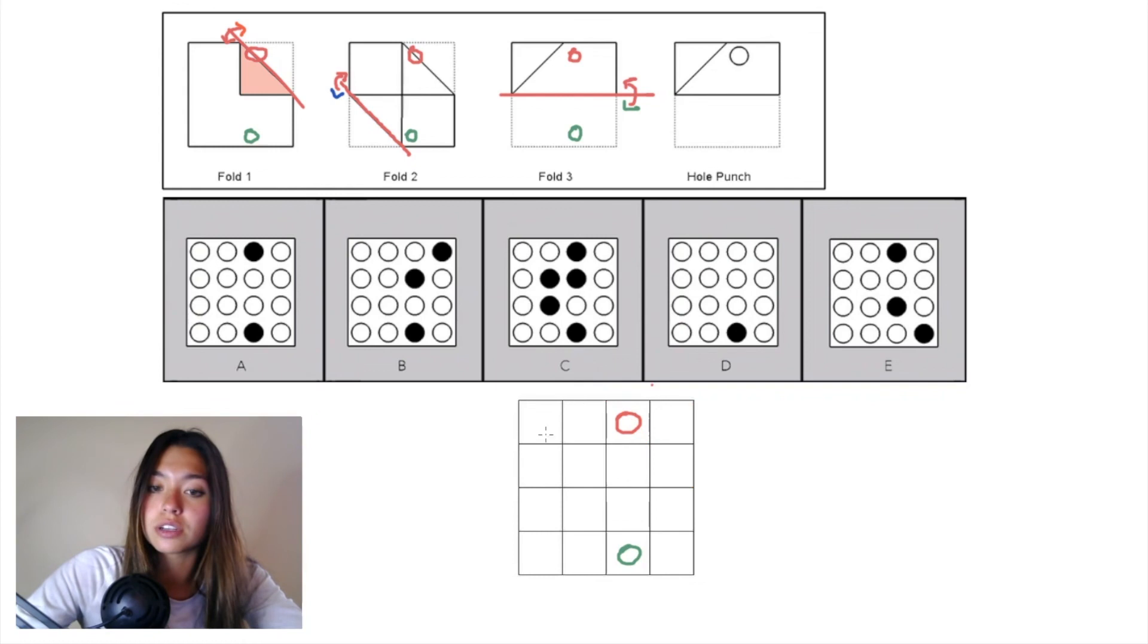That leaves this as our final pattern of hole punches, which matches up with answer choice A. So A is correct.